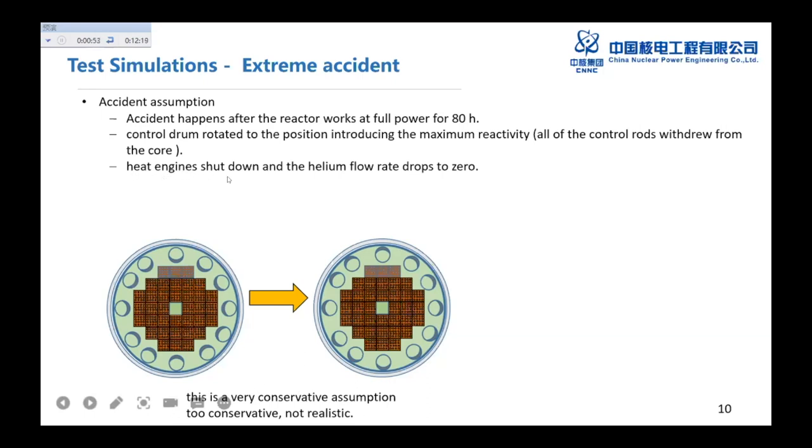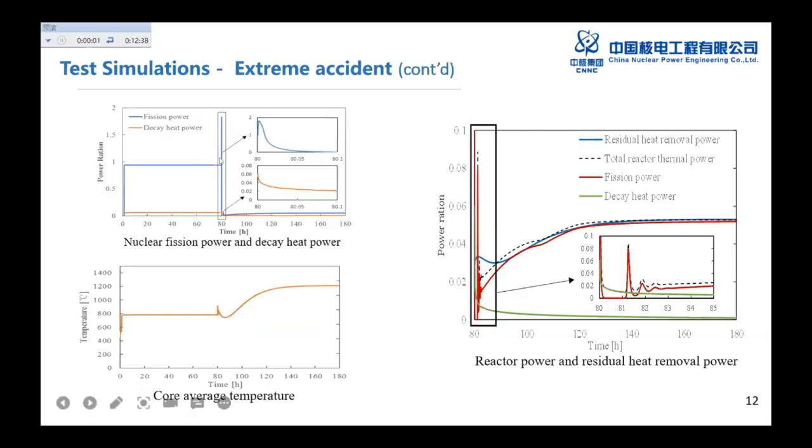And also at this time, the heat engine shut down. And the helium flow rate drops to zero. It means the heat generated in the core cannot be removed by the helium coolant flow. The simulation result is here. You can see, as the control drum withdraw, because of the reactivity sharply increased. So the power rate sharply dropped up about 1.8 times of the full power.